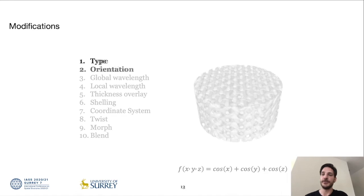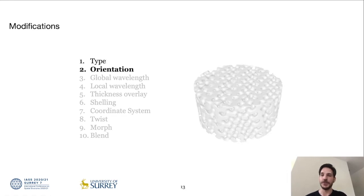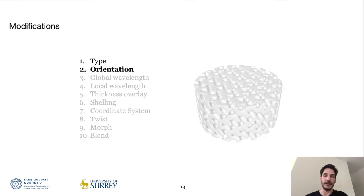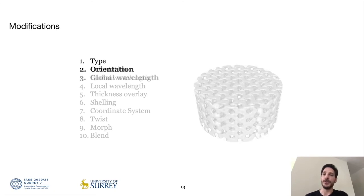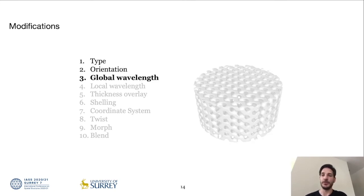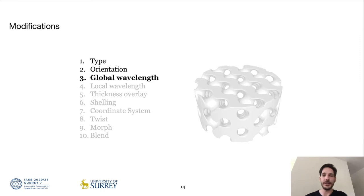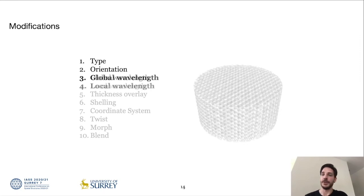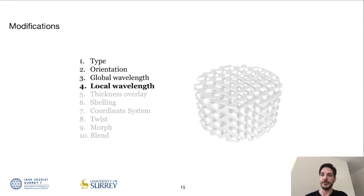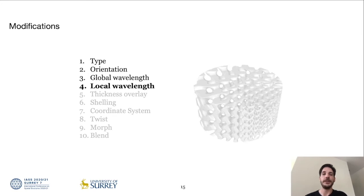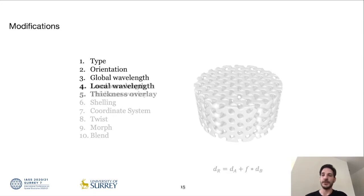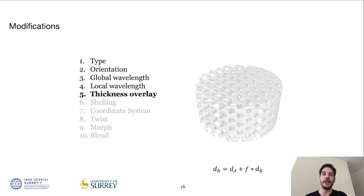The next modification is the orientation of the base plane, the position and rotation of the lattice. Furthermore, with a constant number as a modifier, the global wavelength can be modified. With another field as a modifier, the wavelength can be adjusted locally. The thickness of the solid parts can be adjusted, also both locally or globally, by dilating or eroding the lattice.